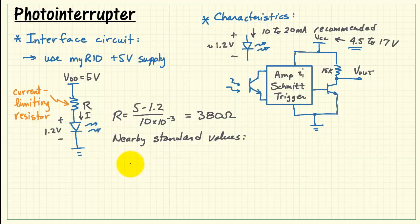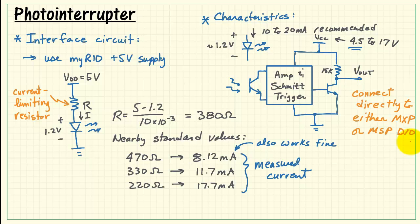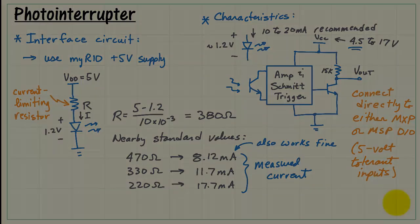Now let's consider some nearby standard resistor values. I took some measurements and found that 380 ohms is closest to 330 ohms, giving us 11.7 milliamps — at the low end of the recommended current. I also found that slightly lower values work fine as well. You can connect the output directly to either the MXP or MSP digital inputs, because they are both 5 volt tolerant inputs.